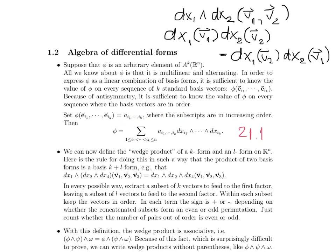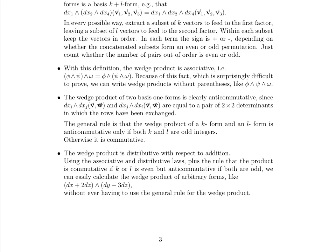Moving on with these wedge products, what else do we know about them? With this particular definition, we can find the wedge product to be associative. And because of that fact, though it's surprisingly difficult to prove, we can write wedge products without parentheses. So this is equal to this, which is also equal to that.